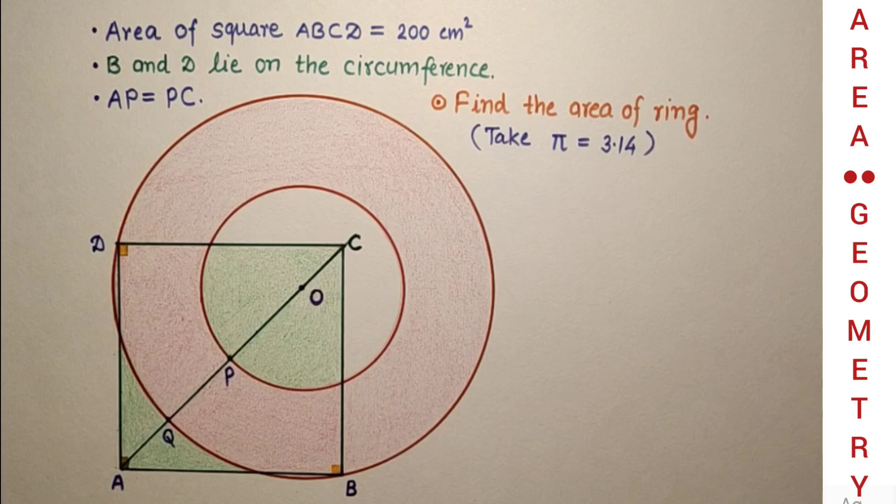In this question we are given two concentric circles that form a ring, and the area of that ring is to be found.